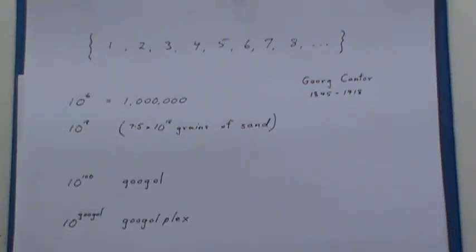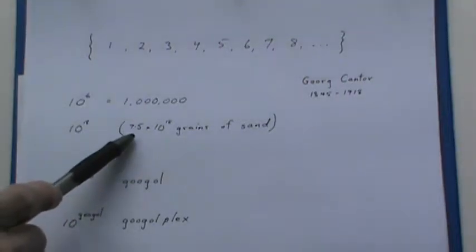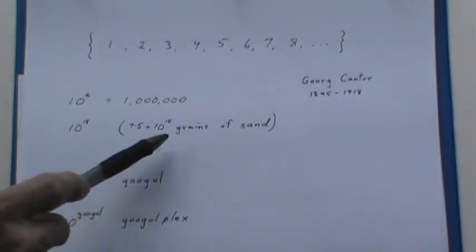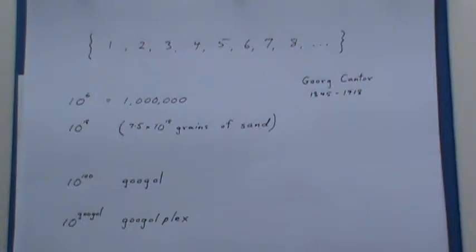For example, there's a number in math called the Googol — that's spelled with an O-L — and that's 10 to the 100. To give you a slight appreciation of how big that number is, I looked up the number of grains of sand on the planet Earth, and they had come up with a figure like this: 7.5 times 10 to the 18th. So if you took all the grains of sand on Earth, lined them up in a row, and put a tag on each one — sand number 1, 2, 3, 4 — that line would represent 10 to the 18th.